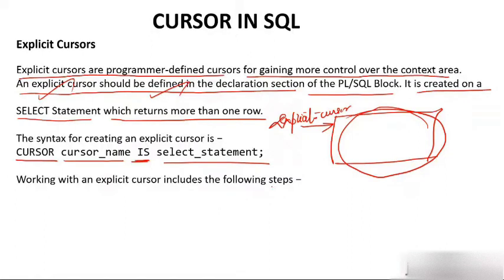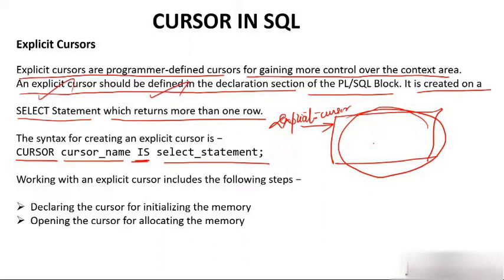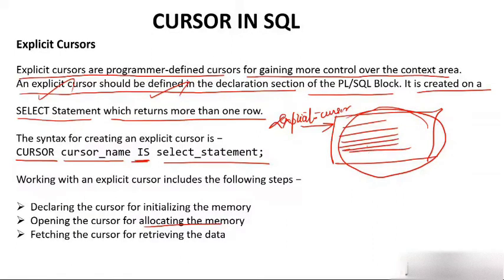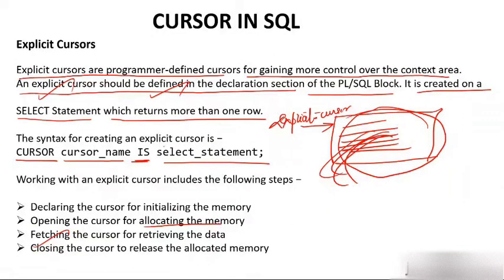Working with an explicit cursor involves the following steps. First, declare a cursor for initializing the memory. Second, open the cursor for allocating the memory. Third, fetch the cursor for retrieving rows — you access one row at a time from the memory area. Finally, close the cursor to release the allocated memory.